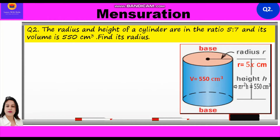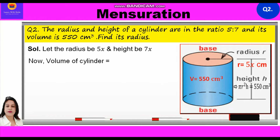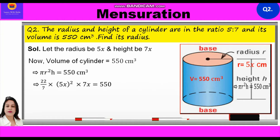Let us start with the solution. Let the radius be 5x and height be 7x. Now, volume of the cylinder is given to us equal to 550 centimeter cube. So, this implies pi r square h is equal to 550. Further, 22 by 7 into 5x whole square into 7x is equal to 550. We have just substituted the values of pi, r, and h.